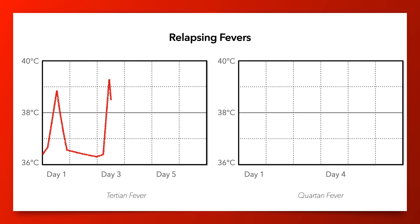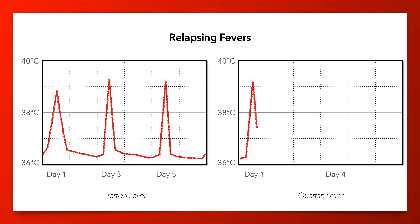Plasmodium vivax, ovale, and falciparum can cause tertian fevers in which febrile paroxysms recur every other day. A quartan fever, in which fevers recur every 3 days, can be caused by Plasmodium malariae.